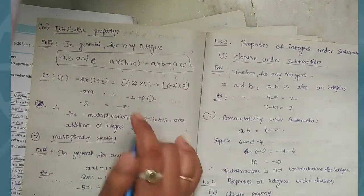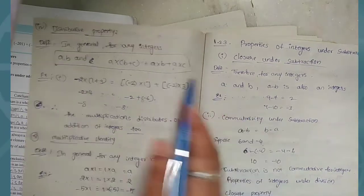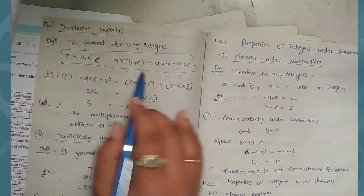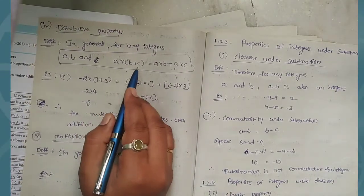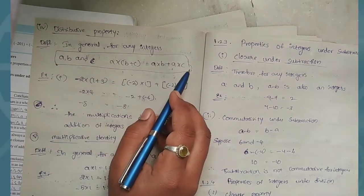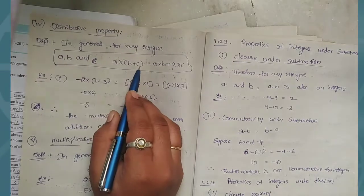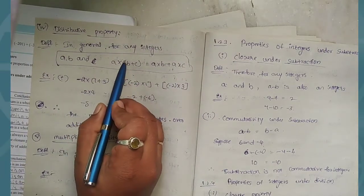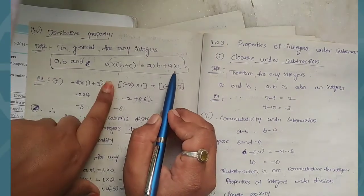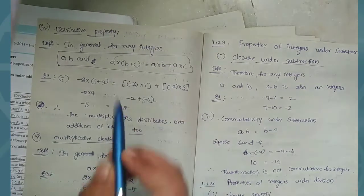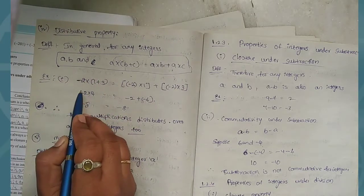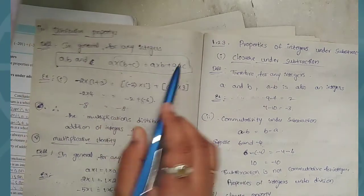Next, distributive property. In general, for any three integers, a into (b plus c) equals a into b plus a into c. Here we first compute a into b, then a into c, and add them. The answer is the same as multiplying a by the sum of b and c. This condition is satisfied.